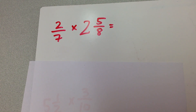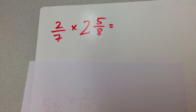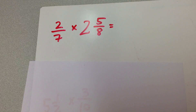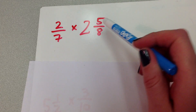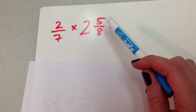Hey again, math class. We're going to continue our discussion about multiplying fractions. So we've talked about how to multiply a fraction times a fraction, but what about a fraction times a mixed number?